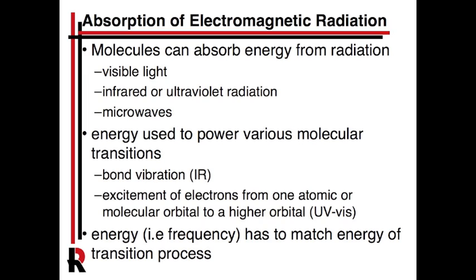We're going to be focusing on electromagnetic radiation and the absorption of electromagnetic radiation by molecules. They can absorb all sorts of different energy from the electromagnetic spectrum, ranging from visible light, which is what we're talking about today, to IR, ultraviolet, and microwave radiation. Molecules have very distinct ways that they can absorb energy, and that energy is used by the molecules to undergo various kinds of transitions.